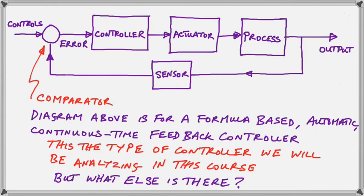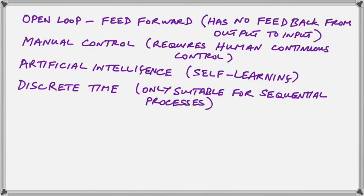But what else is there besides this? We can have an open loop feed-forward instead of feedback system, in which case there is no monitoring of the output to ensure it is exactly what you have set. We can have a manual control system where humans continuously control some quantity without any feedback at all. Or we can have an artificial intelligence self-learning situation, as in the case of a robot where the robot by experience modifies itself. We can also have a discrete time controller that uses some sort of sequential process where time is not an issue.